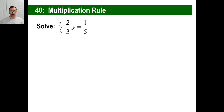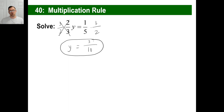You multiply by 3-halves on the left side, and that means you do it to the right side too. The 2-thirds just goes away — it's just y now. Y is equal to, going straight across, 1 times 3 is 3, and 5 times 2 is 10. Y equals 3-tenths. You've just solved this equation. Looks kind of funky and hard, but you multiply by the reciprocal to clean up the 2-thirds, make it 1, and there you go.